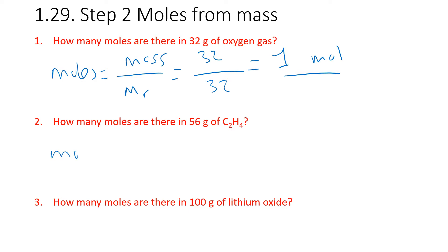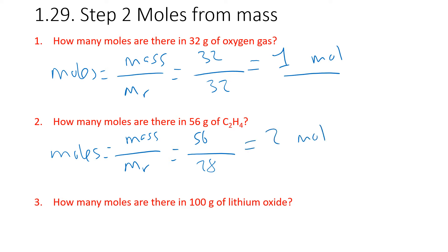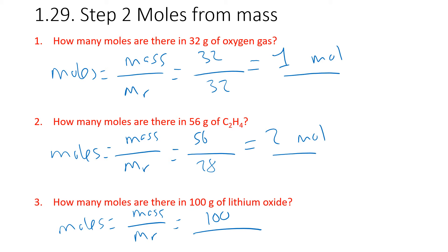How many moles are there in 56 grams of C2H4? Moles equals mass over MR. Our mass is 56, our MR is 28 because each carbon is 12 and then you've got four hydrogens which are each 1. That gives us 2 moles. And for the last one, how many moles are there in 100 grams of lithium oxide? Moles equals mass over MR. The mass is 100. Lithium oxide is Li2O — each lithium is 7, oxygen is 16, so 14 plus 16 equals 30. 100 divided by 30 is 3.33 moles.